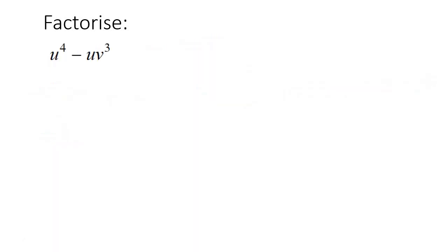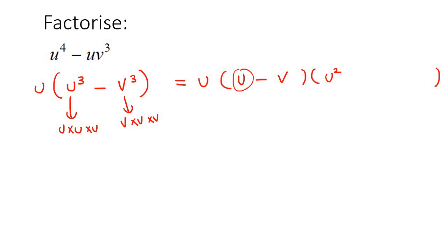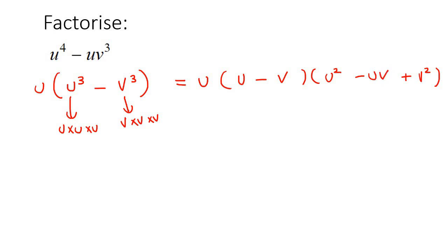With this question, you would first take out u as a common factor, so you'd be left with u³ take away v³. Inside this bracket we've got a difference of cubes. We know u times u times u gives u³, and v times v times v gives v³. So we make two brackets — one small, one big — and in the small bracket we write u take away v, with the negative because this is a negative. Then square u to get u squared, square v to get v squared — that's always positive. In the middle multiply them to get negative uv, then switch the sign to positive.